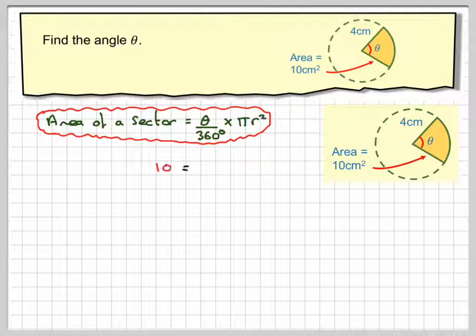Right, putting in the numbers. So we have 10 equals theta over 360 times π times 4 squared.